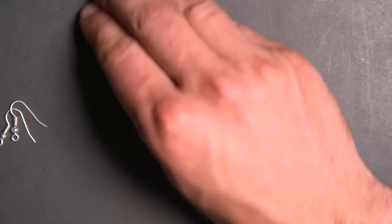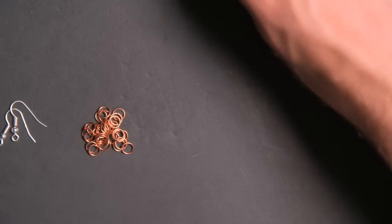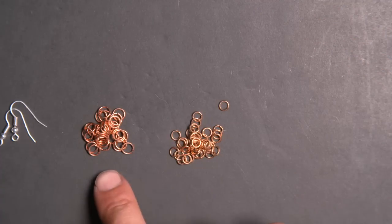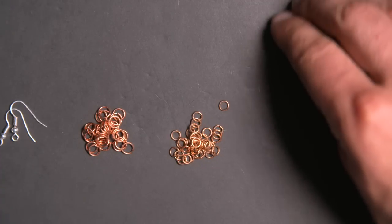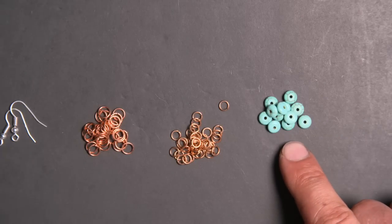You're going to need a few things for this project. Obviously you're going to need a couple of earring hooks - mine are sterling silver. You'll also need a number of copper 5/32" rings, some copper 1/8" rings (these rings are both in 20 gauge), and you'll need some turquoise beads. I got these from Michaels but I've seen them for sale at a number of craft and jewelry stores as well. So let's get started.